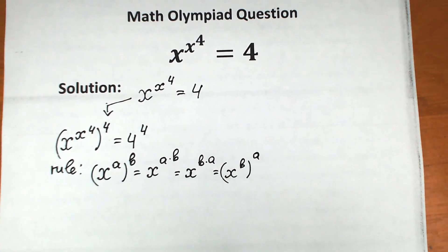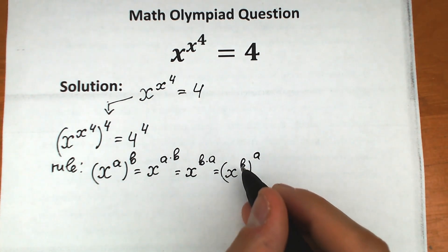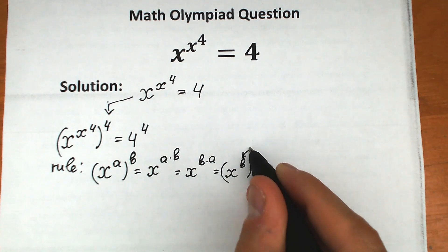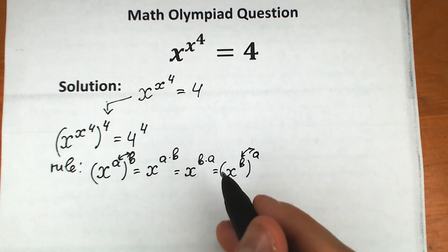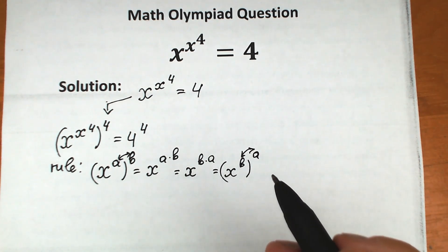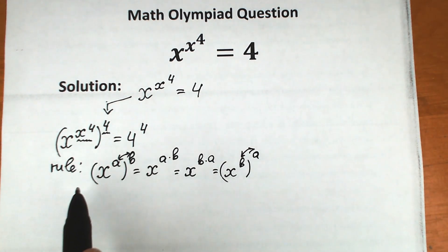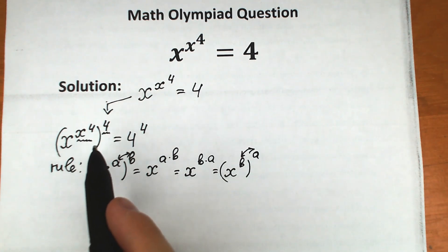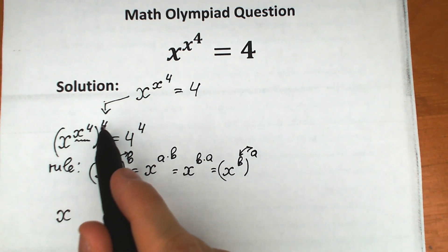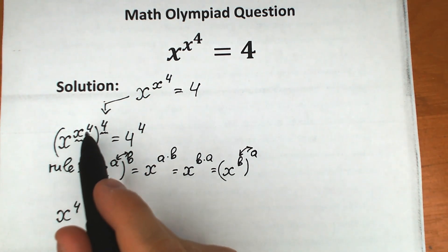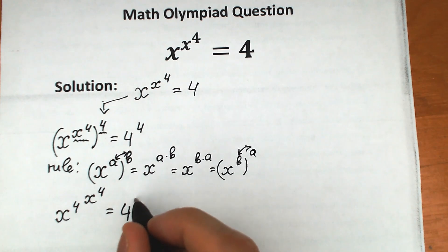Looking at the beginning: we had a inside and b outside, but in the end we can have b inside parentheses and a outside. So we can change the position of powers — this is also known as the rule of interchange. Applying this rule here: inside parentheses we have x to the power 4, and outside we have 4. According to this rule we swap positions, so we get x to the power 4, raised to the power x to the power 4, equal to 4 to the power 4.